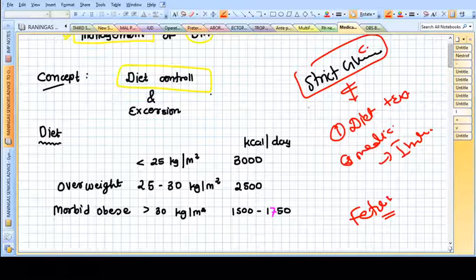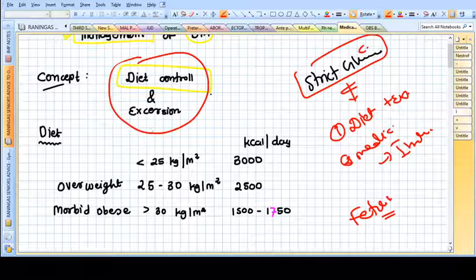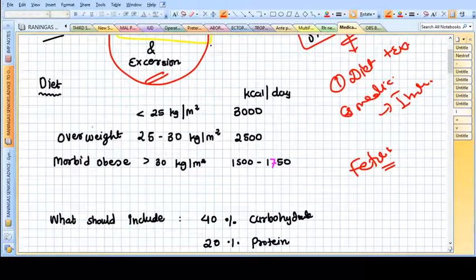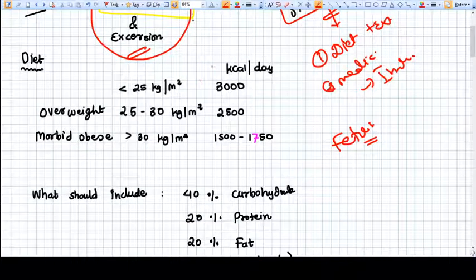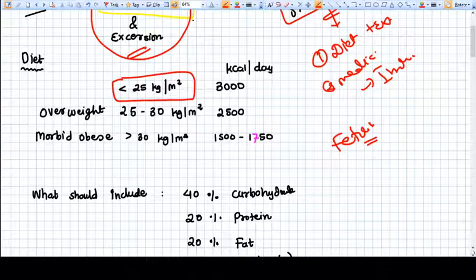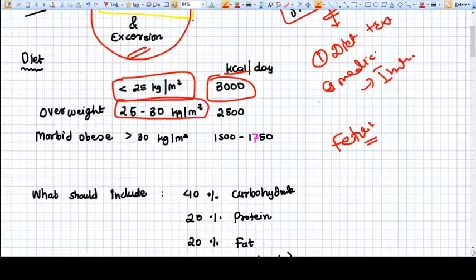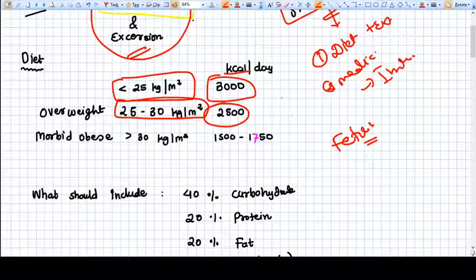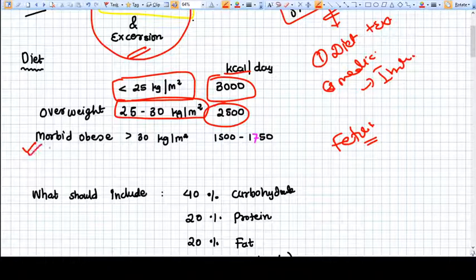First, diet control and exercise. We restrict calories according to BMI. If BMI is less than 25, average calorie intake per day is 3000 kilocalories. In overweight patients with BMI 25 to 30, we provide 2500 kilocalories per day. In morbidly obese patients, we decrease calorie intake to 1500 to 1750 kilocalories per day.